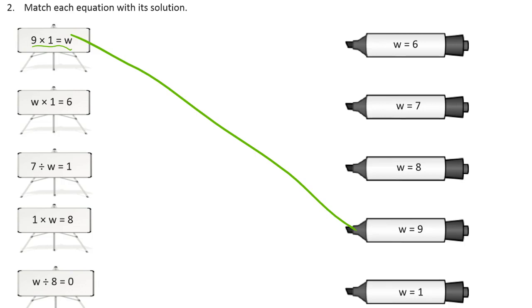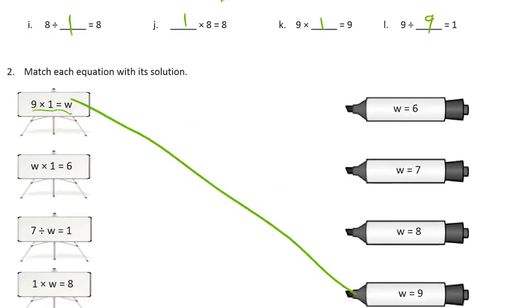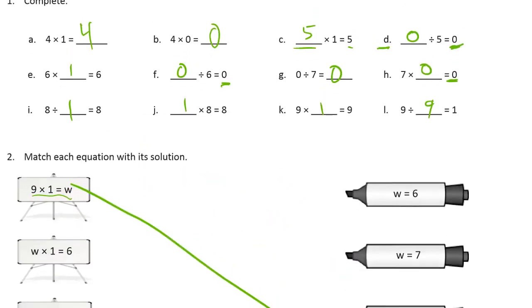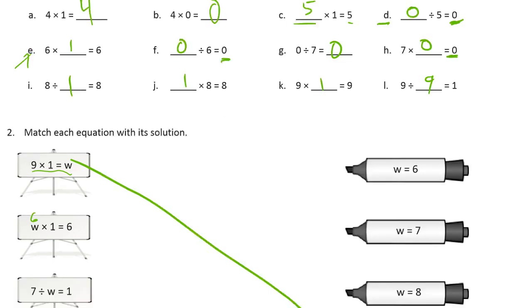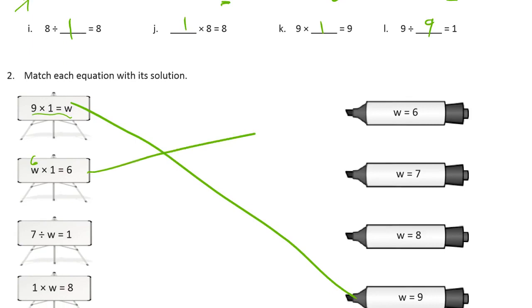And W times 1 equals 6. That's more the same stuff that we had up here, right? We know that 6, and if you look at E, here we have 6 times 1 equals 6. So we know that W has to be a 6. So we need W equals 6. And we'll match that up right here.